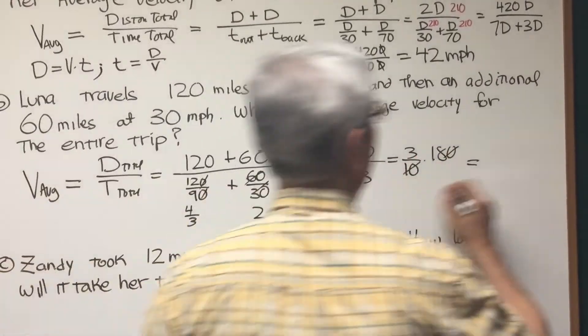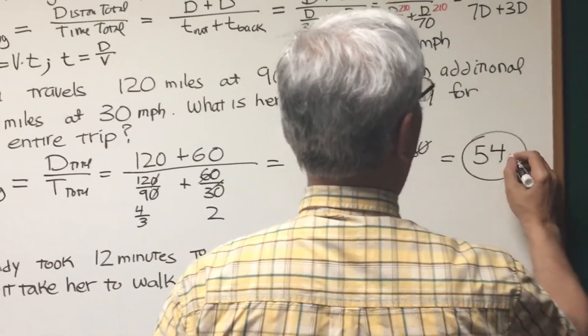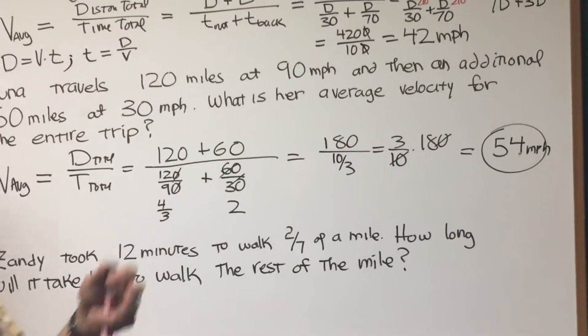Which is then equal to 3 tenths of 180. And the 10 cancels the zero there. 3 times 18 is 54 miles per hour. That's her average velocity over the entire trip.